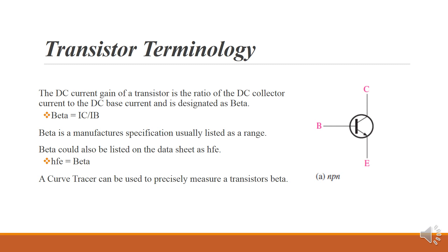Beta is also a manufacturer specification and is listed as a range. The term HFE may be used interchangeably with beta on the datasheet. A curve tracer is a device that's used to measure a transistor's beta. If you don't have access to a curve tracer, just use the center point of the range from the datasheet.